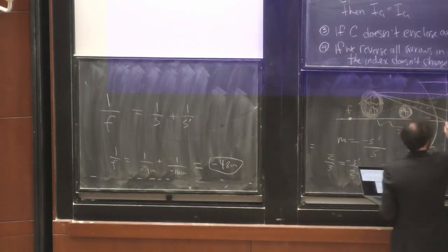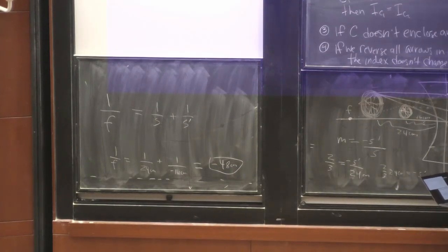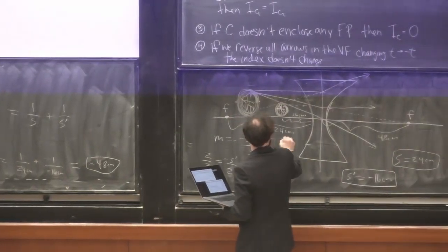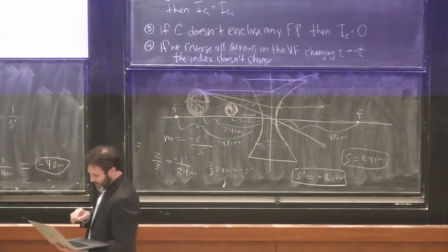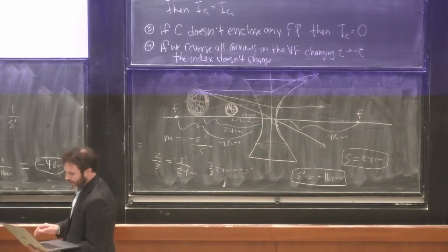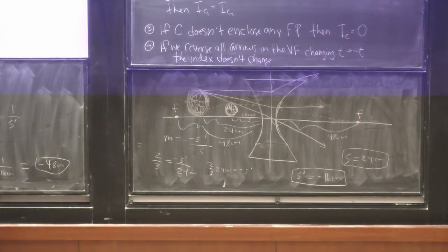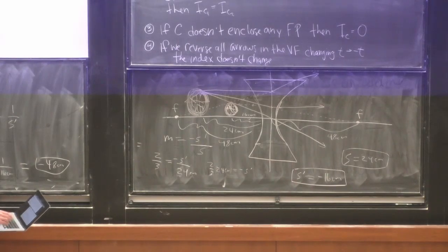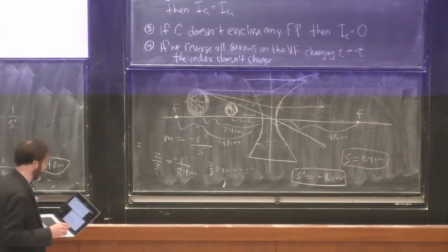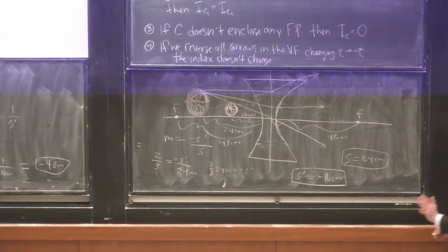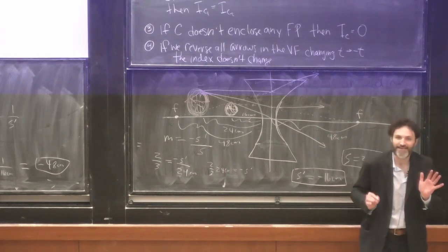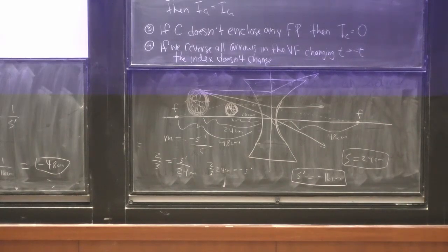The focal length is 48 centimeters on each side. It's negative, as we expect, because it's negative for a diverging lens. We'll see in the next chapter that this is a reasonable value for the focal length of a corrective lens for someone who's moderately nearsighted. So all you future optometrists, this is the type of lens you'd give to somebody who's nearsighted.